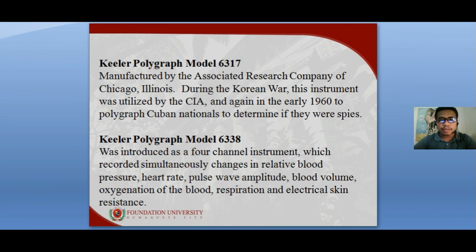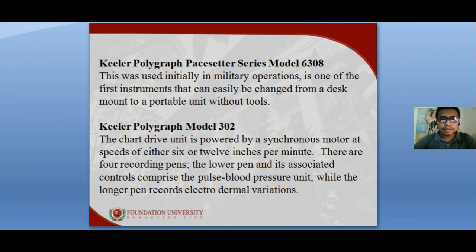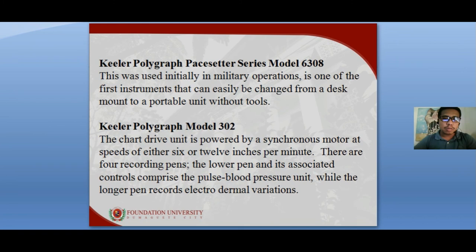Another model is the Keeler Polygraph 6338, introduced as a four-channel instrument that simultaneously recorded changes in blood pressure, heart rate, pulse wave amplitude, blood volume, oxygenation of the blood, respiration, and electrical skin resistance. Model 6308 was used initially in military operations and was one of the first instruments that could easily be changed from a desk mount to a portable unit without tools. Model 302 features a chart drive unit powered by a synchronous motor at speeds of either 6 or 12 inches per minute, with four recording pens.